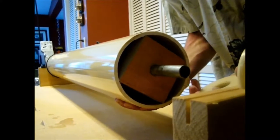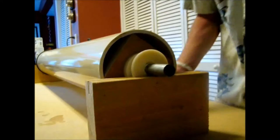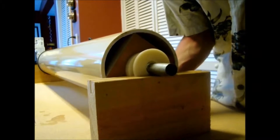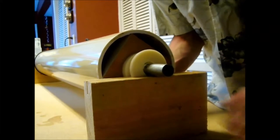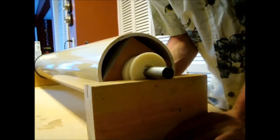The extra nylon washers are used as spacers. Make sure your square block is wedged snugly inside of your PVC, and the hole you drilled is directly in the center.